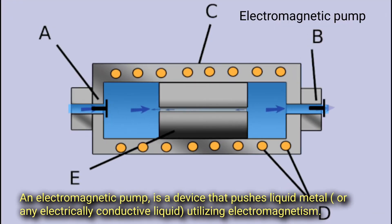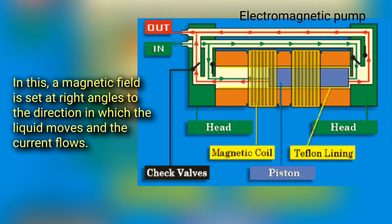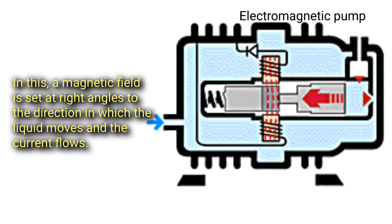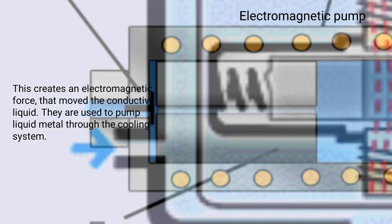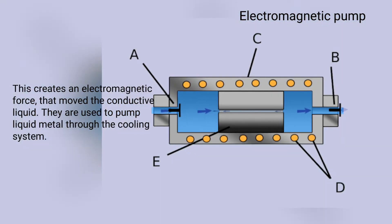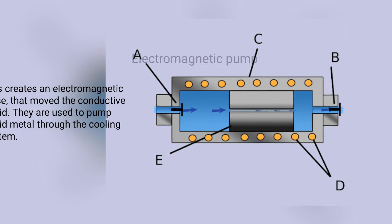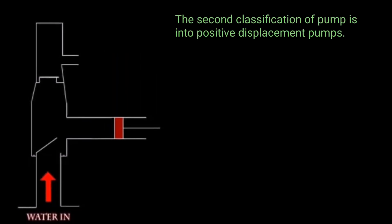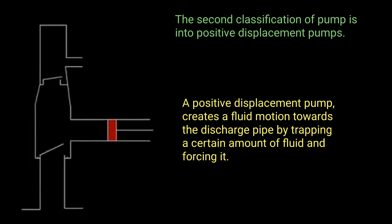An electromagnetic pump is a device that pushes liquid metal or any electrically conductive liquid utilizing electromagnetism. In this, a magnetic field is set at right angles to the direction in which the liquid moves and current flows. This creates an electromagnetic force that moves the conductive liquid. They are used to pump liquid metal through cooling systems.